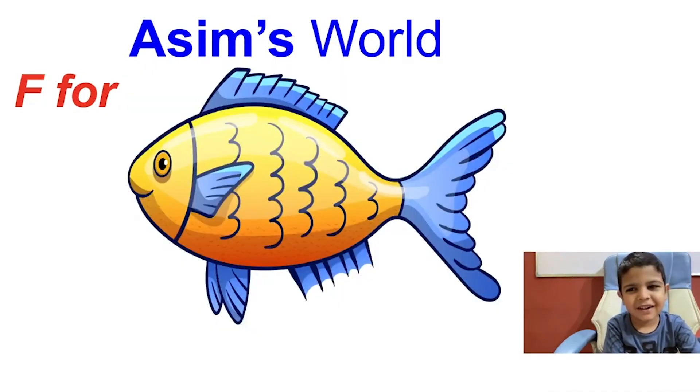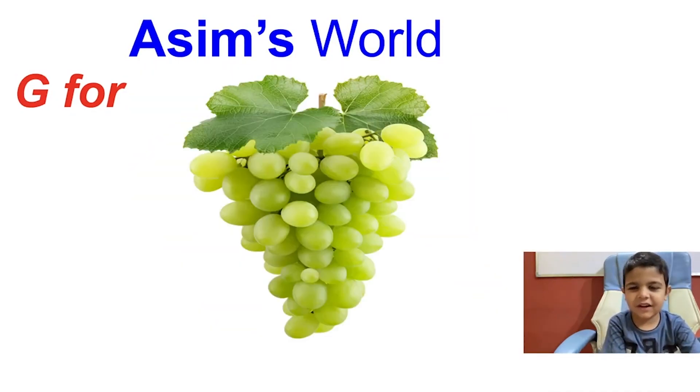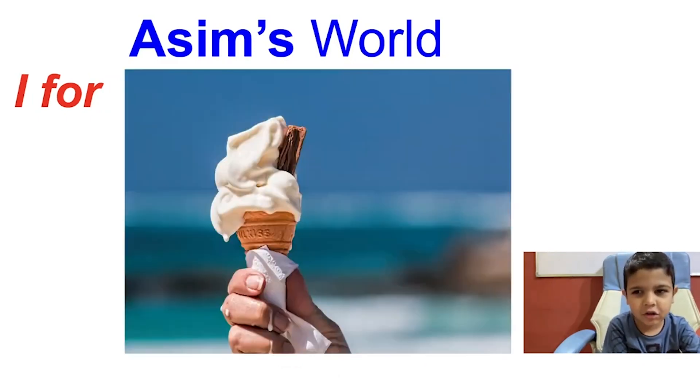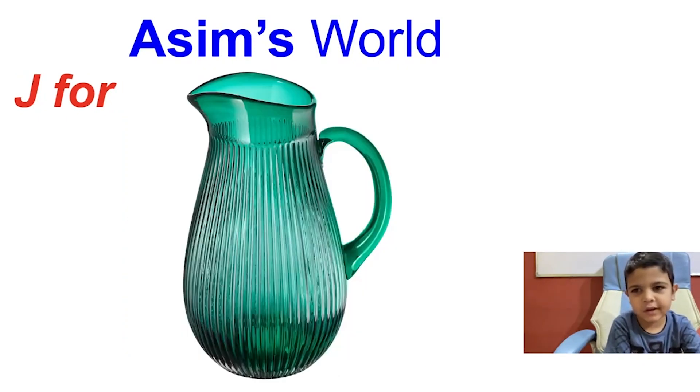D for animal. F for fish. D for griff. A for horse. I for ice cream. D for duck.